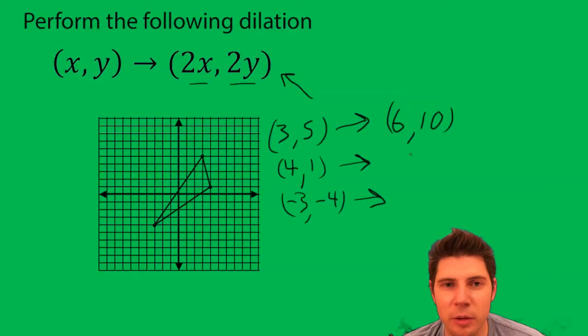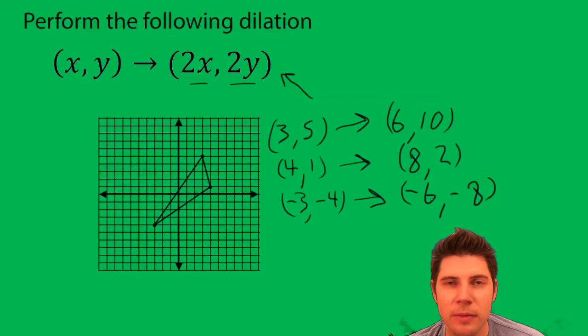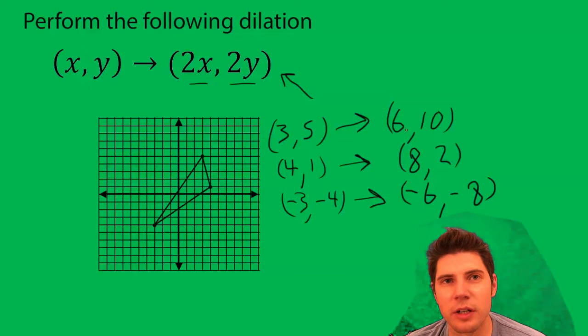So we just double the 3 to get 6, double the 5 to get 10, double the 4 to get 8, double the 1 to get 2, and then double the 3 and double the negative 4 to get negative 8. So these are the new points of our dilation.